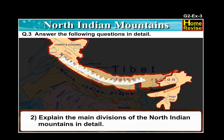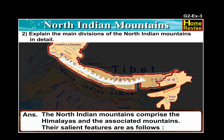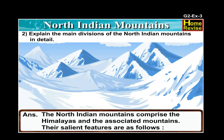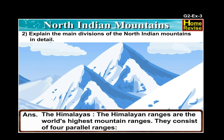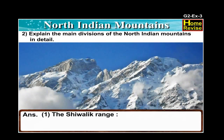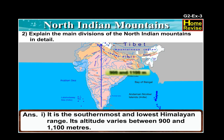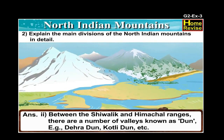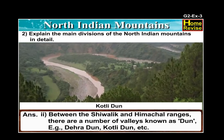Question number two: Explain the main divisions of the North Indian Mountains in detail. The North Indian Mountains comprise the Himalayas and the associated mountains. The Himalayan Ranges are the world's highest mountain ranges, consisting of four parallel ranges. Number one, the Shivalik Range, is the southernmost and lowest Himalayan range with altitude varying between 900 and 1100 meters. Between the Shivalik and Himalayan ranges there are valleys known as Doon, for example Dehra Dun, Kotli Dun.